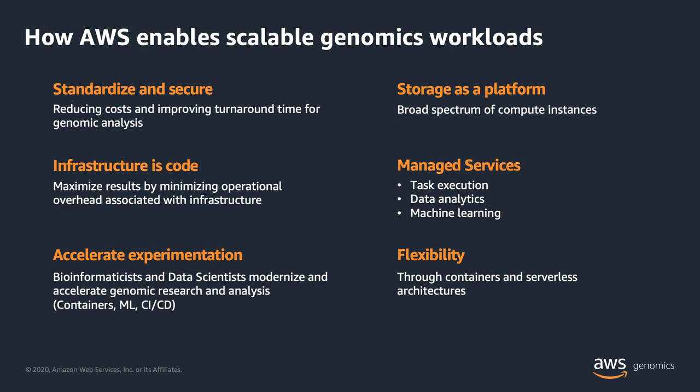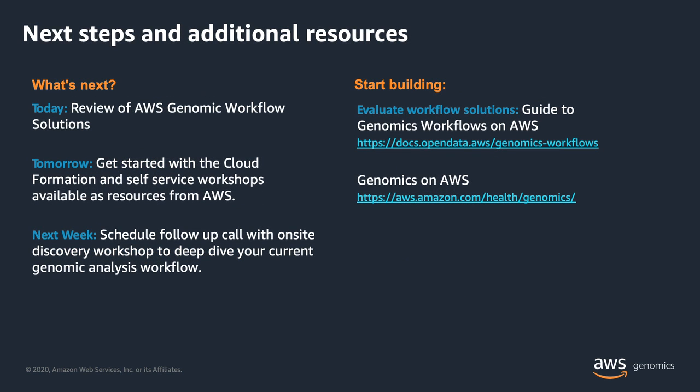The most important takeaways from this talk are: the cloud provides storage as a platform; there is a broad spectrum of compute instances to process your data as efficiently as possible; there are plenty of managed services for task execution, running analytics, and doing machine learning; and finally, there are serverless and container-based architectures that provide you flexibility and agility. I encourage you to explore more about the cloud and AWS and how it can be used for genomics.